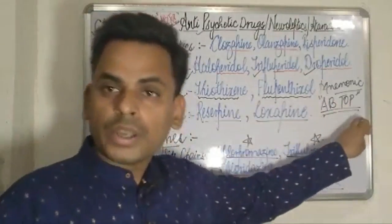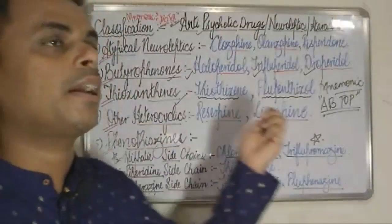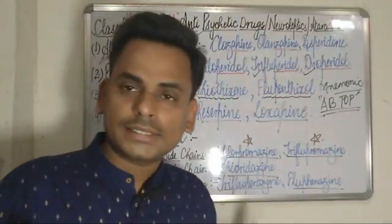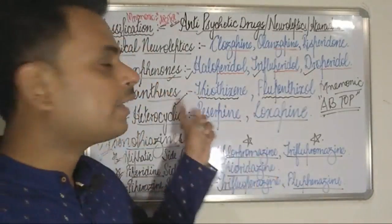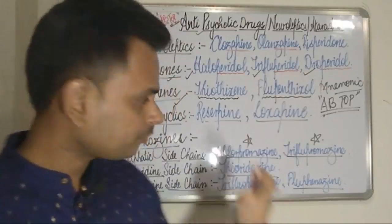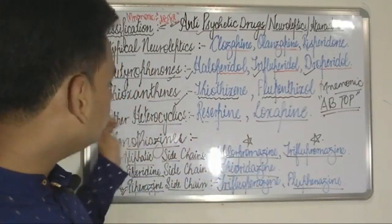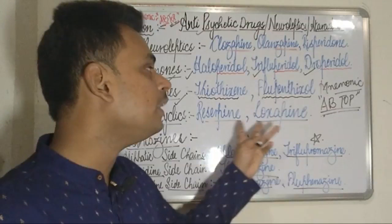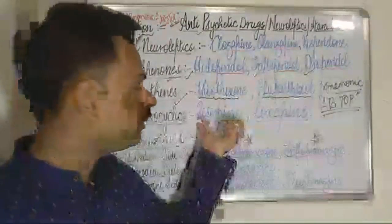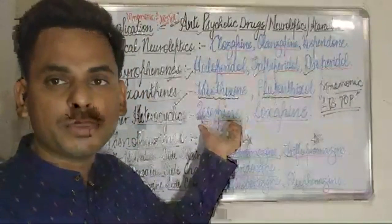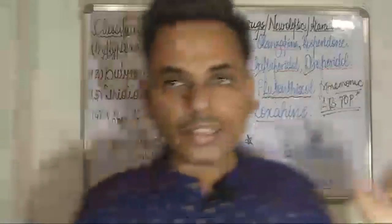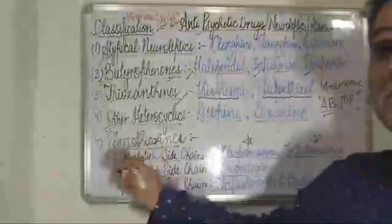The O of TOP refers to the other heterocyclic compounds. The name itself indicates that these are chemical compounds with a heterocyclic structure. This category comprises the famous drugs reserpine and loxapine — reserpine being one of the most ancient drugs used in the treatment of psychosis.